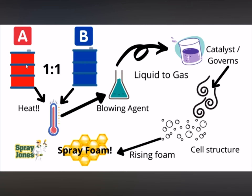Before you go off on isocyanates, understand that they're used in the product Loctite, and most major plywood manufacturers are using isocyanates to glue the sheets together in the plant. This product is mixed one to one by volume — equal parts volumetrically of A and B.